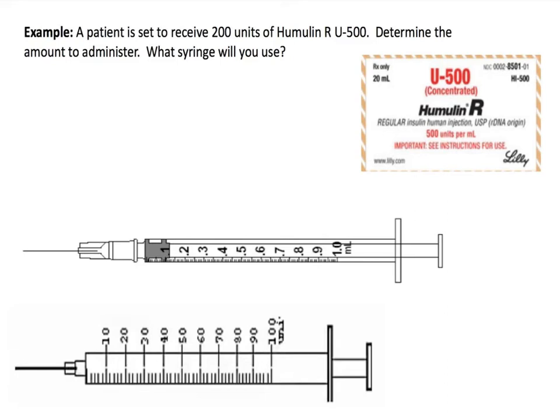The next example states: we have a patient who is set to receive 200 units of Humulin R U500 insulin. We need to determine the amount to administer and then choose the syringe that we will be using.